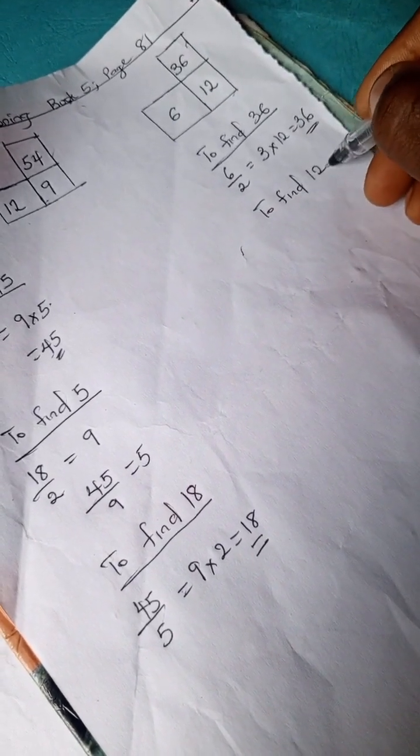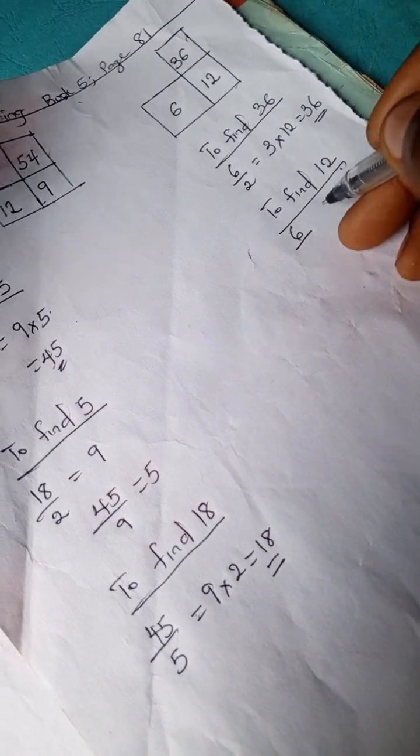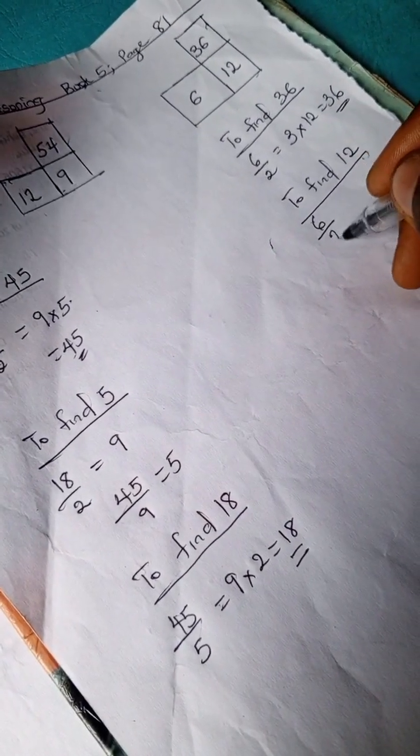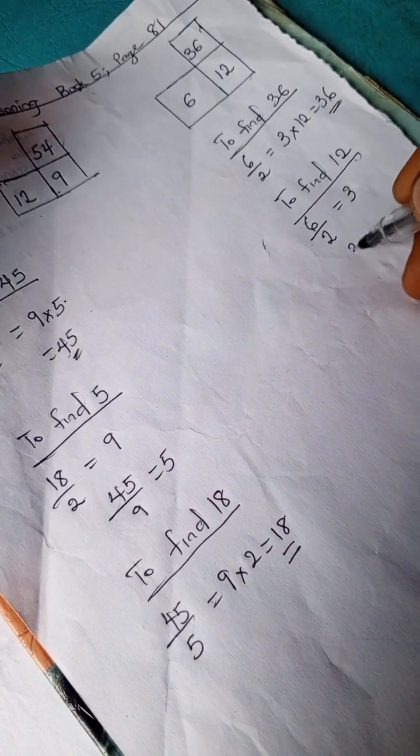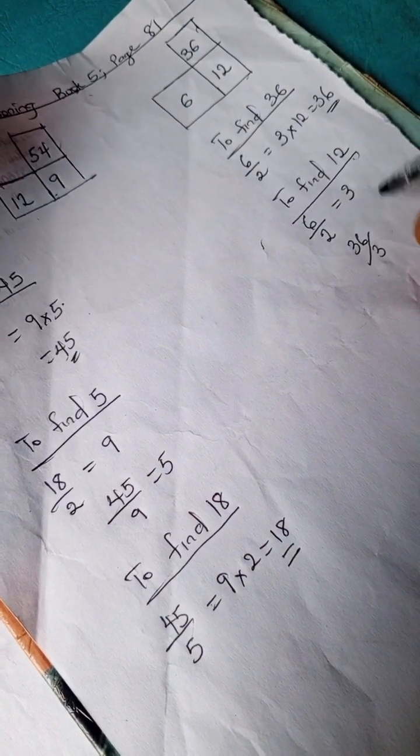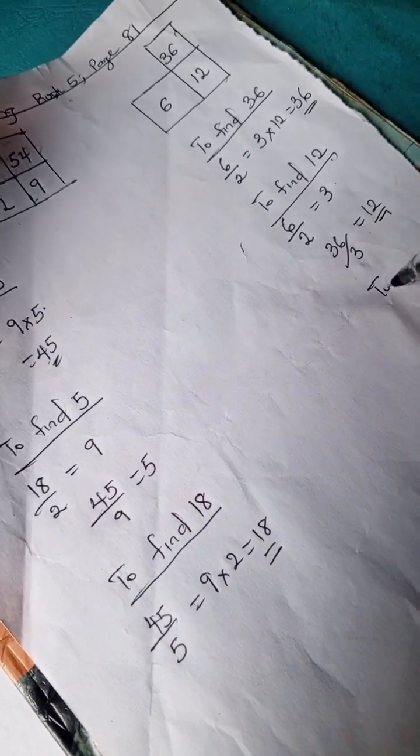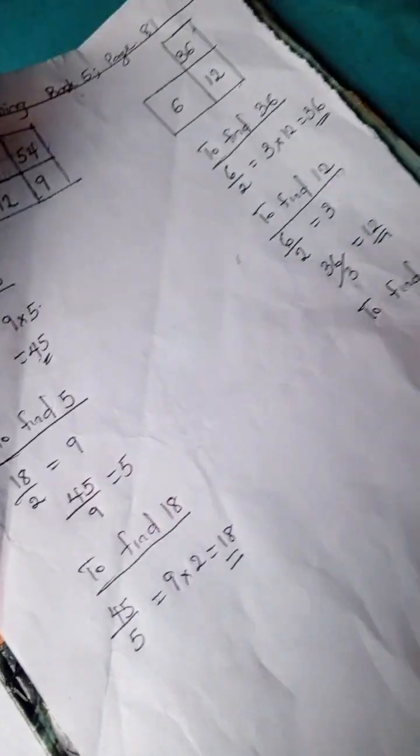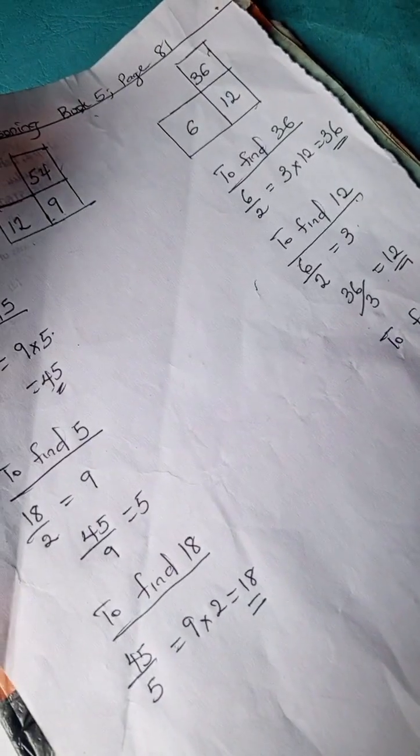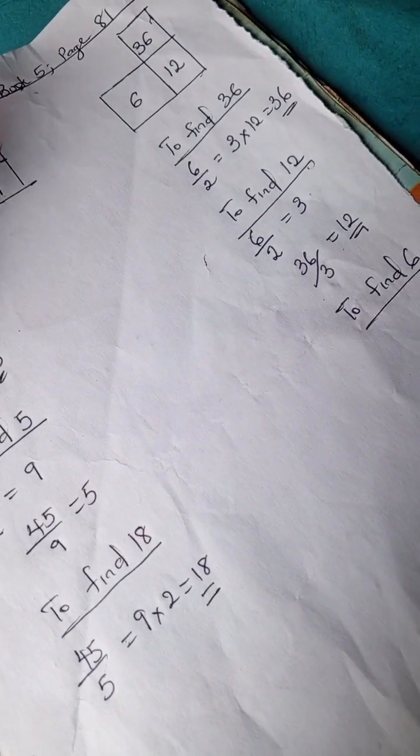is 12. We have 6 divided by 2 is 3, hence 36 divided by 3 that you've gotten is 12. To find 6,